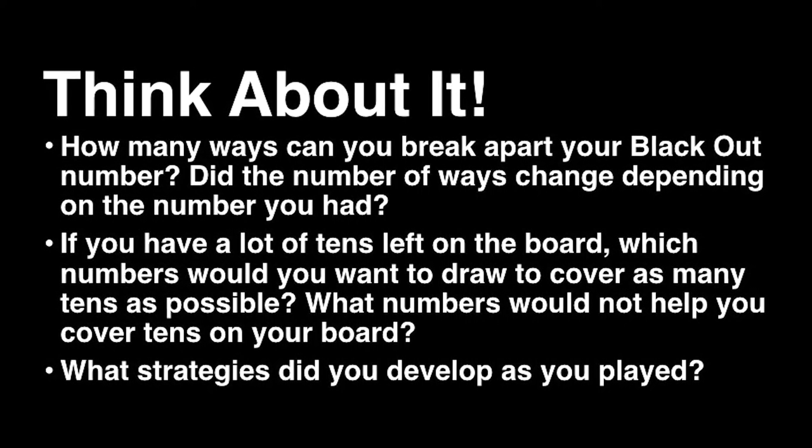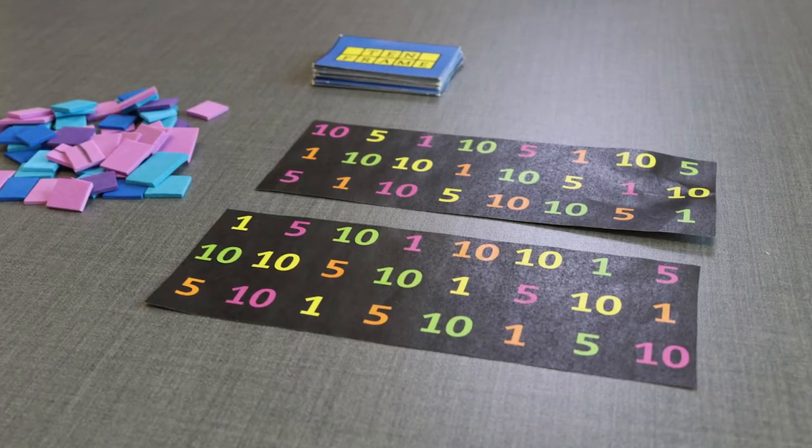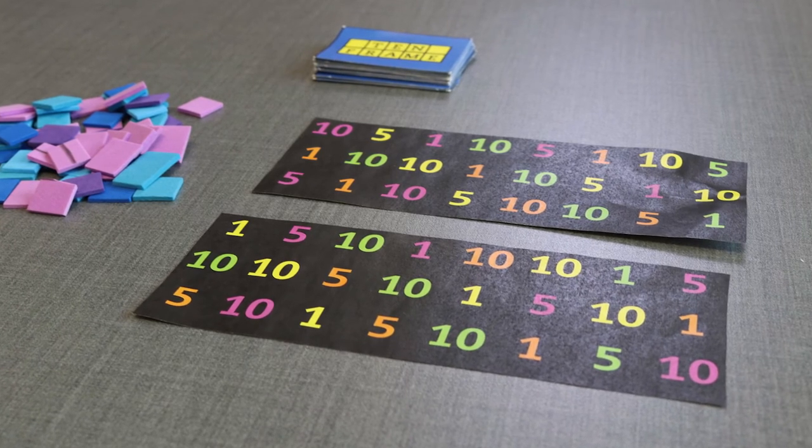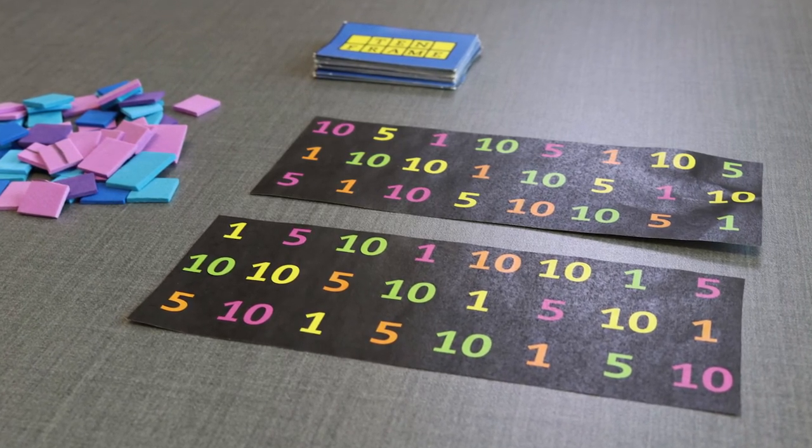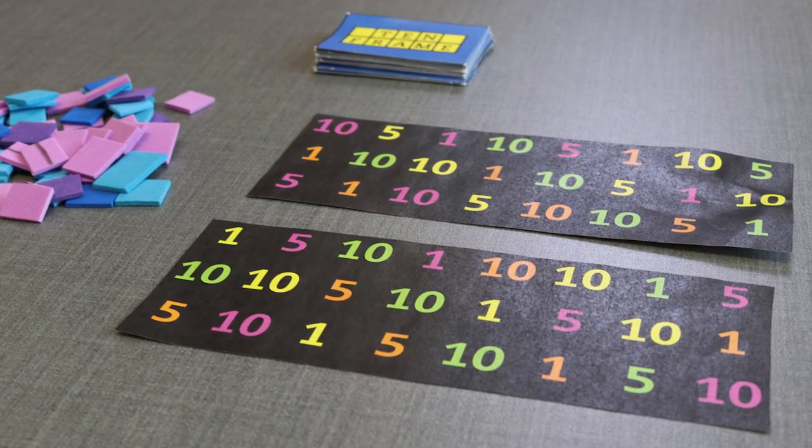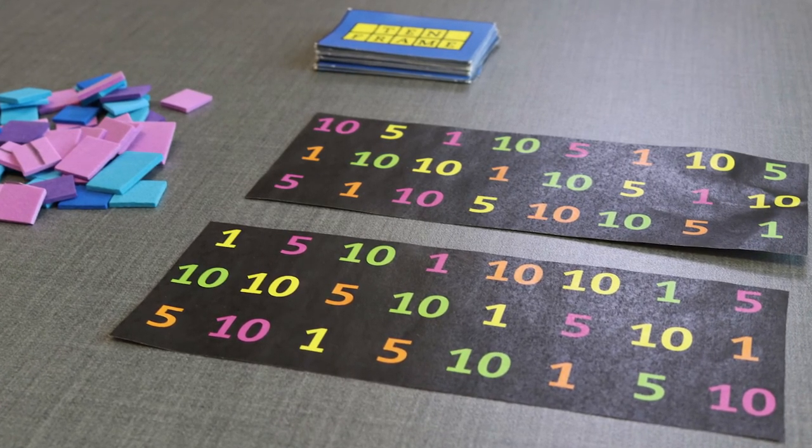After playing the game, you can ask if you have a lot of tens left on your board, which numbers would you want to draw to cover as many tens as possible? What numbers would not help you cover tens on your board? What strategies did you develop as you played?